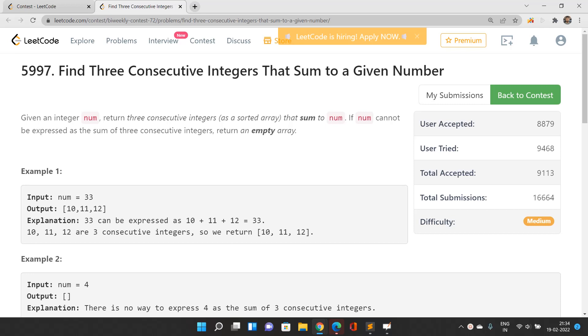All right guys, welcome to our channel Code with Sannie. In this video we'll be discussing the second problem of the bi-weekly contest: Find Three Consecutive Integers That Sum to a Given Number. This problem is totally related to math - we need to write down some equations and find a valid solution to that equation.